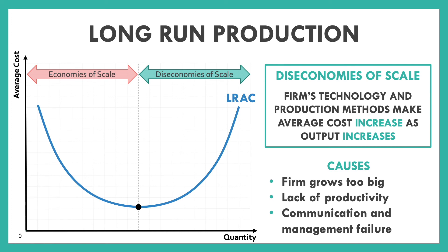It's kind of like the idea of too many cooks in the kitchen. So we look at this in the long run to understand that businesses want to bring their average costs way down. They're able to bring it further down as they achieve economies of scale, but they do hit a point where they start to hit diseconomies of scale, in which their average cost goes back up.